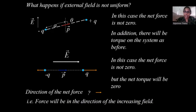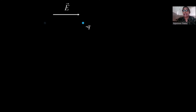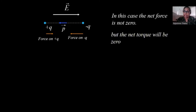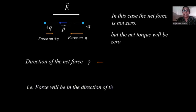Now if we keep the dipole anti-parallel to the direction of the non-uniform electric field, a force acts on the minus q charge in one direction and on the plus q charge in the other direction. There is a net non-zero force, while the torque is zero. The net force in this case acts in the direction of decreasing field.